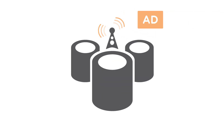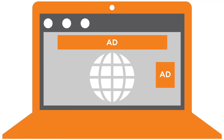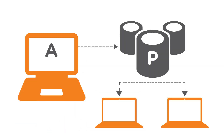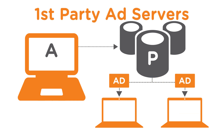Publishers figured out that ads could be delivered dynamically if the ad sizes and spaces were standardized. Instead of loading an actual image, pages carved out a predefined shape as they loaded and called an external server to retrieve the correct image for the space. Because these servers are owned and operated by publishers, they are called first-party ad servers.